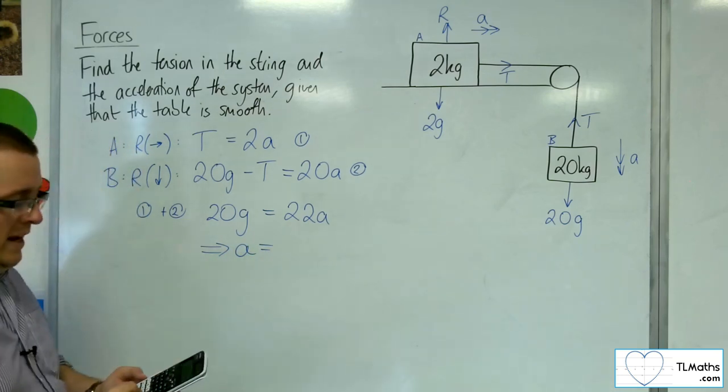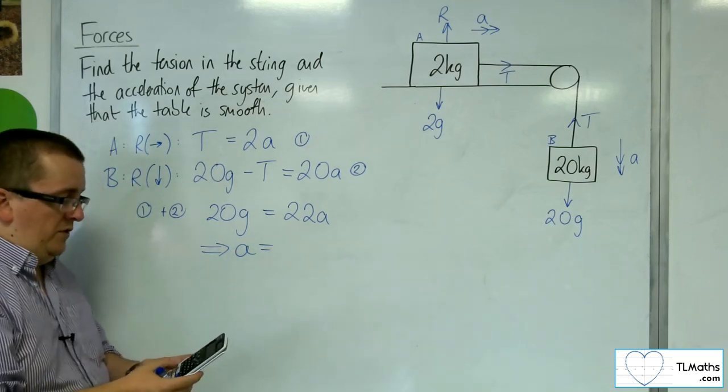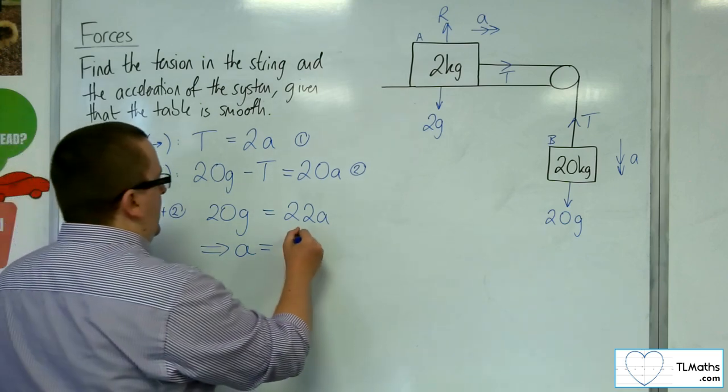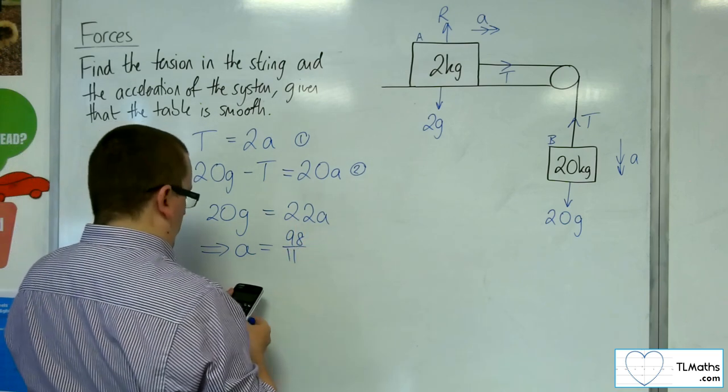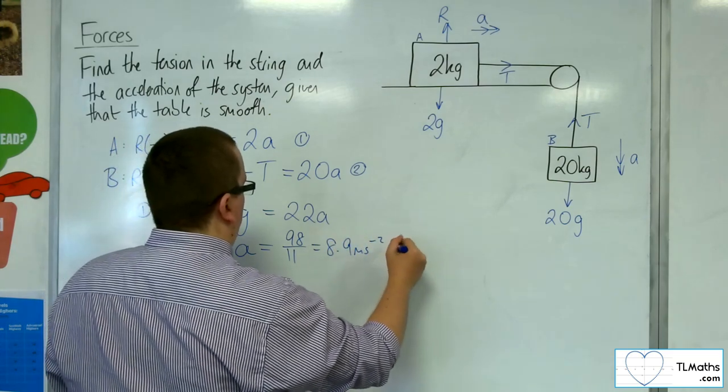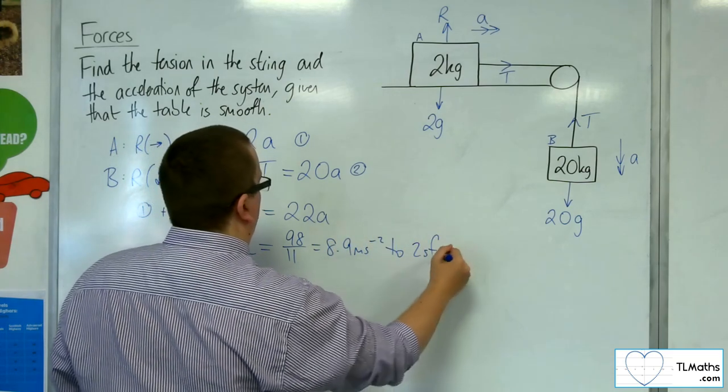So if I take g as 9.8, 20 lots of 9.8 divided by 22 gets me 98 elevenths, which is equal to 8.9 metres per second squared to two significant figures.